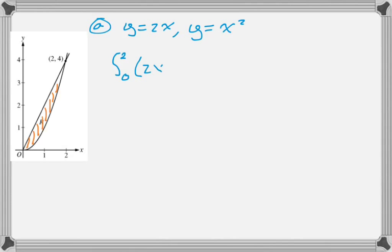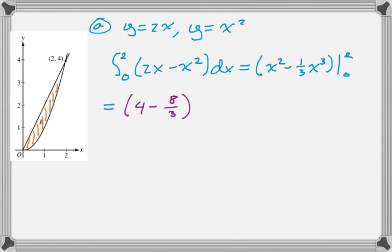So, from 0 to 2 of the top curve minus the bottom curve, we integrate that to get x squared minus 1 third x cubed. We're going to evaluate 0 and 2. At 2, we get 4 minus 8 thirds.